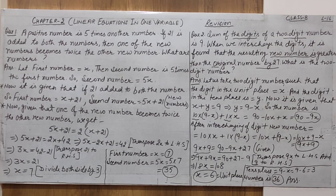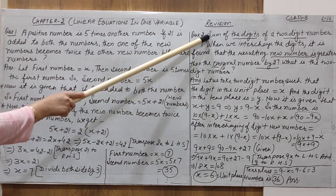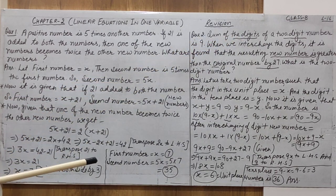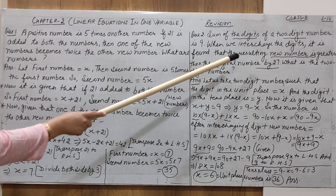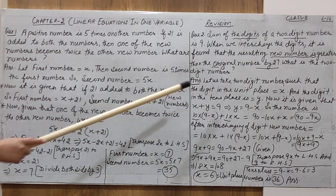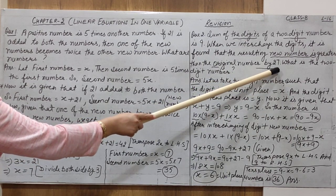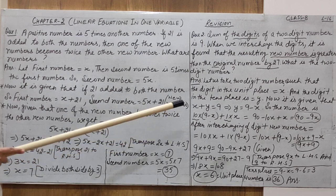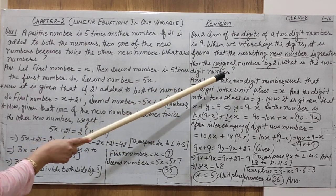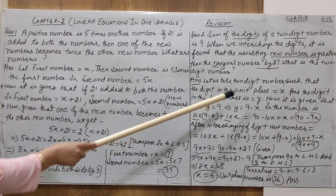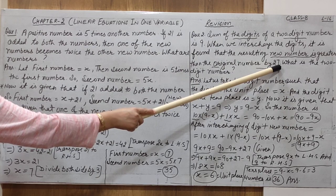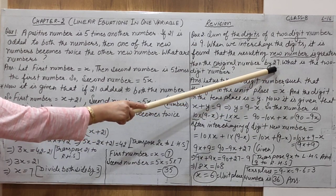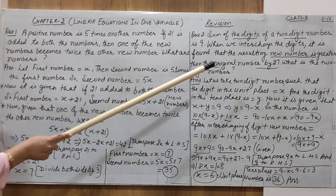Let us revise one more question — Question 2 of Exercise 2.4. The question is: the sum of the digits of a two-digit number is 9. In a number like 27, the digits are 2 and 7 — where 7 is at the unit's place and 2 is at the tens place. These are called digits.